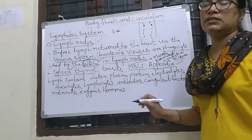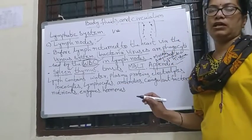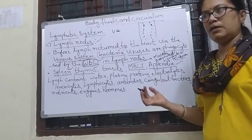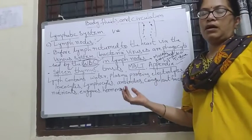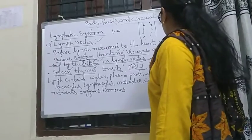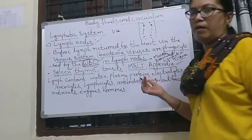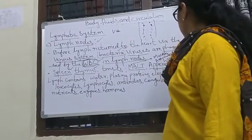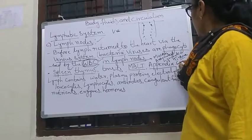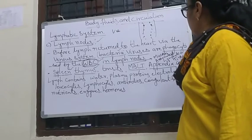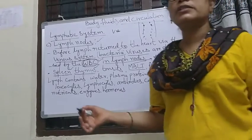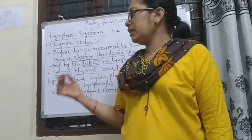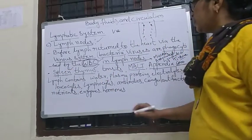The appendix is called a vestigial organ — it is not actively used in humans. But in animals like cow, buffalo, and horse, the appendix is very important for them.